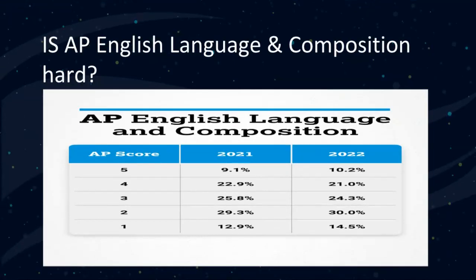A lot of students are asking: is AP English Language and Composition hard? You can see that students who got fives in 2021 were 9.1%, which is actually high compared to previous years — it used to be 6% and 7%. There is improvement in 2022, and I'm sure in 2024 you will improve the percentage. I'm very optimistic. Students who are coming to my class want to get an A. That is not hard to do, but it's not really easy either.